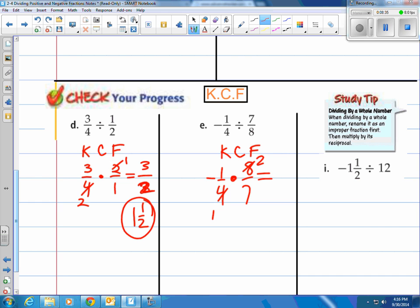So we have 1 times 2 is 2. We have 1 times 7 is 7. But we had a negative times a positive. I know that's going to be a negative fraction. So it's -2/7.